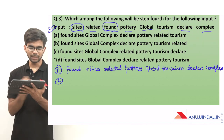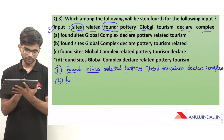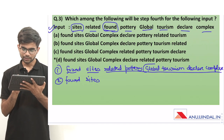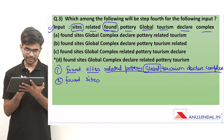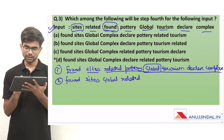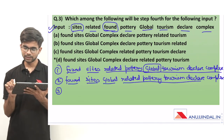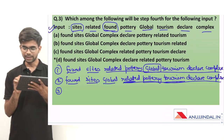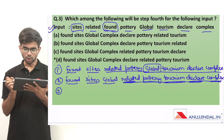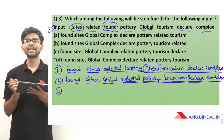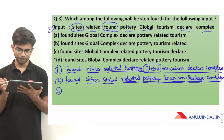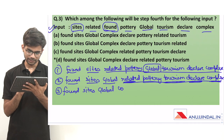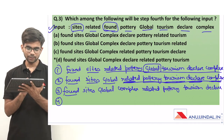For step 2, the next word after 'found' should be 'sites', which is already in the correct place. From the remaining 6 words, 'global' has the minimum letters at 6. Step 2 is: found, sites, global, then the rest in the same order. For step 3, from the remaining 5 words — 'related', 'pottery', 'tourism', 'declare', and 'complex' — all have 7 letters each. So we arrange them by dictionary order. 'Complex' comes first among these 5 words. Step 3 is: found, sites, global, complex, then the remaining words.